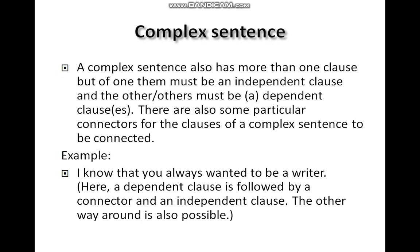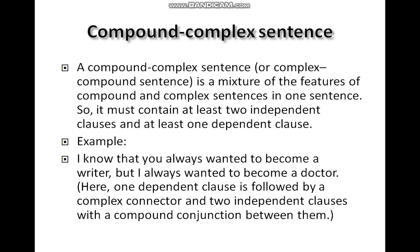A complex sentence also has more than one clause, but one of them must be an independent clause and the other must be a dependent clause. There are also particular connectors used to link the clauses. For example: 'I know that you always wanted to be a writer.' Here a dependent clause is followed by a connector and an independent clause, or the other way around is also possible.